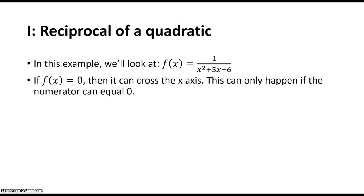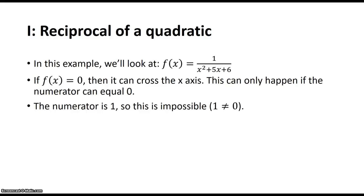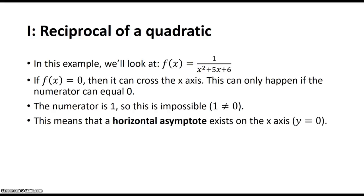If f of x equals 0, then it can cross the x-axis. And if it could, it could only happen if the numerator is equal to 0. As you can see, the numerator is 1 and you can never make 1 equal to 0. So this is impossible. Therefore f of x cannot equal 0 and cannot cross the x-axis. So a horizontal asymptote exists on the x-axis where y equals 0.